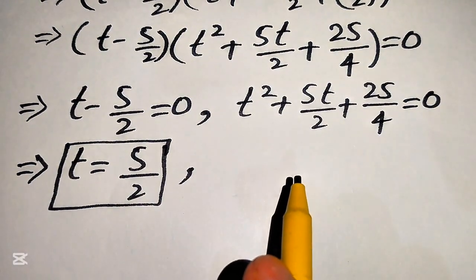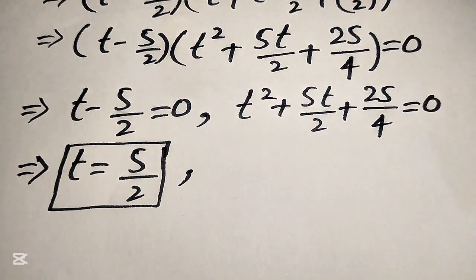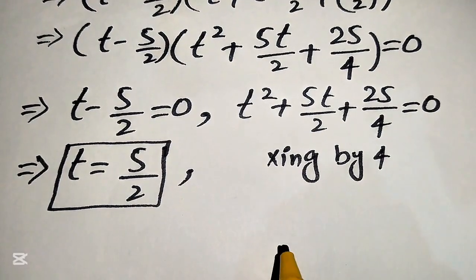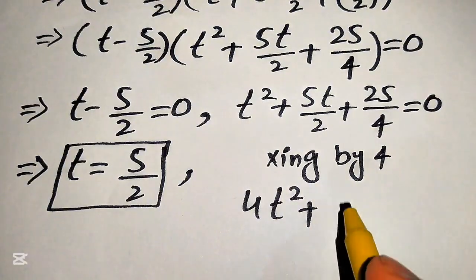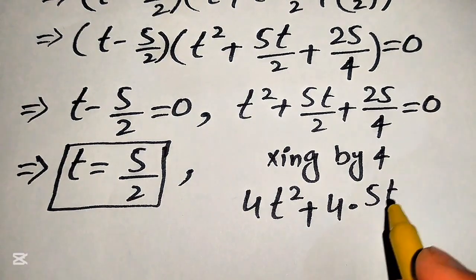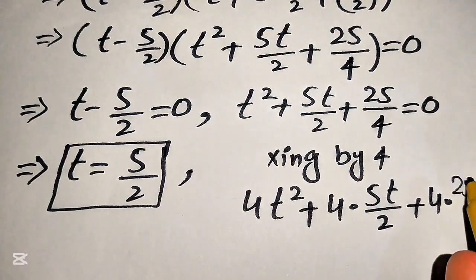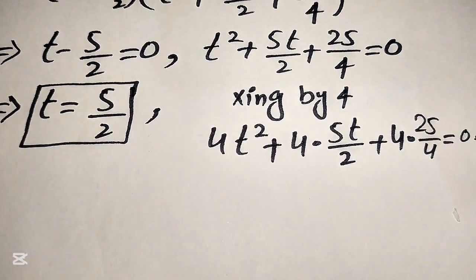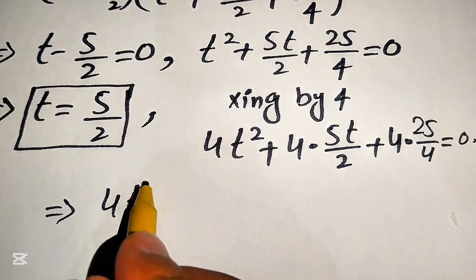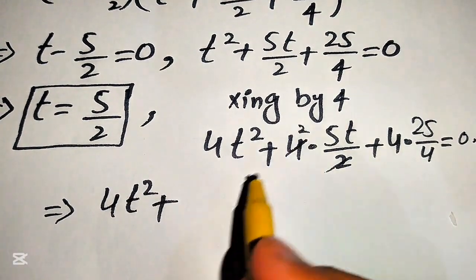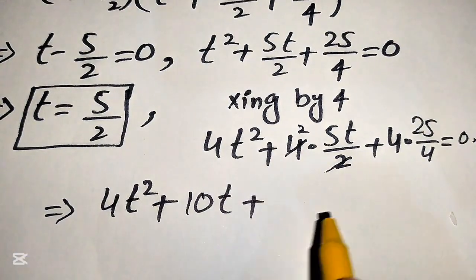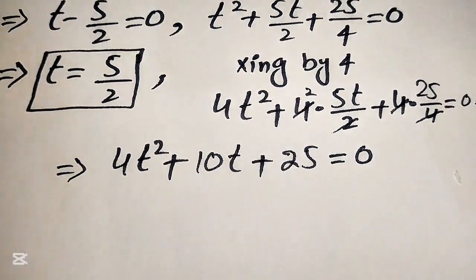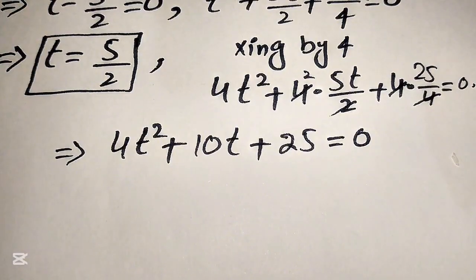To clear the fractions in the quadratic, we multiply both sides by 4. This gives 4t squared plus 4 times (5t over 2) plus 4 times (25 over 4) equals 0, which simplifies to 4t squared plus 10t plus 25 equals 0.